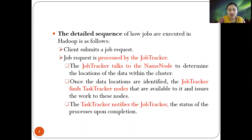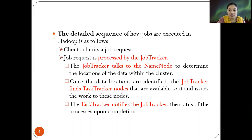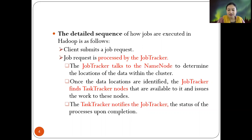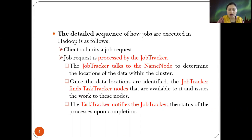The job tracker talks to the name node to determine the locations of the data within the cluster. As we have seen, the name node is the top-level component that handles multiple data nodes. Once the data locations are identified, the job tracker finds available task tracker nodes and issues the work to those nodes — the tasks for that particular job are distributed and submitted to the task trackers.